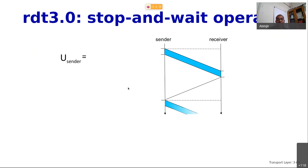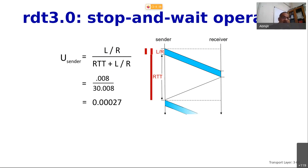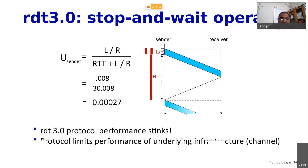Calculating the utilization: U_sender = (L/R) / (RTT + L/R). Plugging in the numbers gives the very small value of 0.00027. So the sender is highly underutilized — the performance of RDT 3.0 is very bad. People spend enormous amounts of money building networking infrastructure, and if you are not transmitting using that infrastructure you are basically wasting that investment. We need to do better.